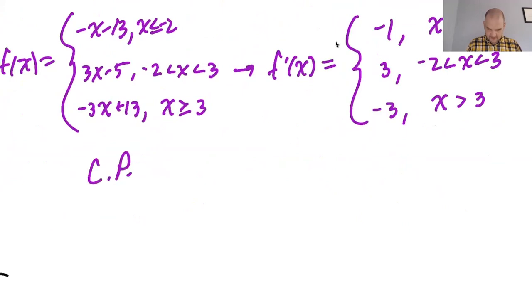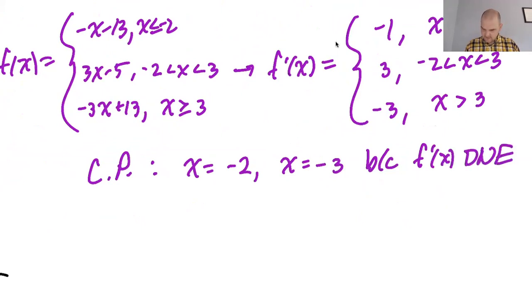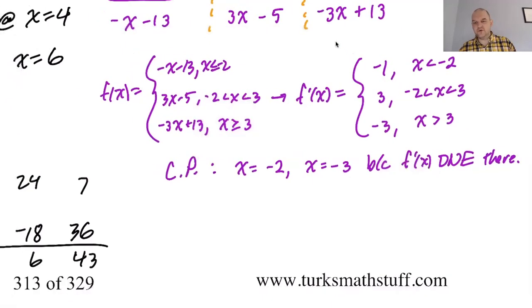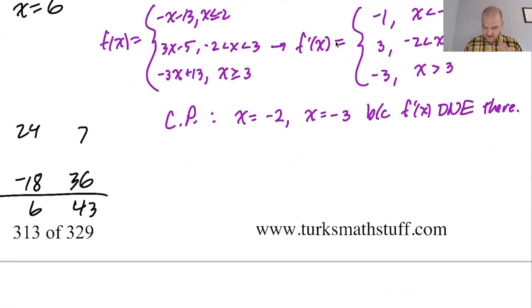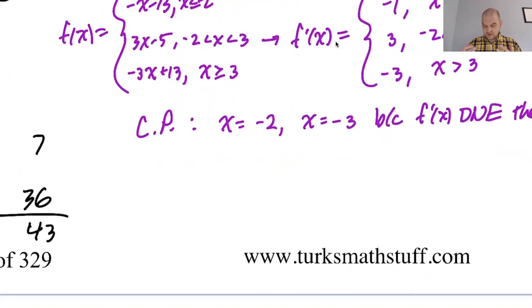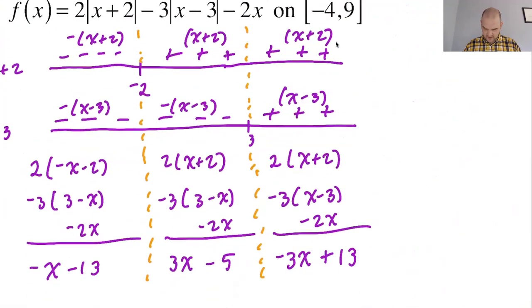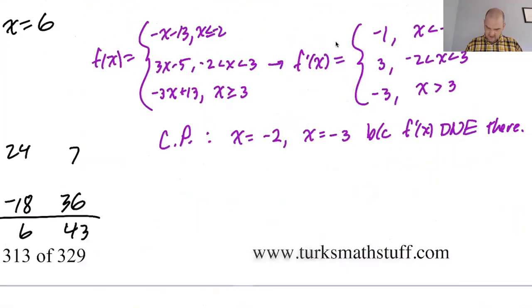So critical points x equals negative 2, x equals 3, because f prime of x does not exist there. Weird critical points, right? The ones where the derivative doesn't exist are like the weirdest ones. And that's what we've gotten here. So did I even set up the candidate's test?